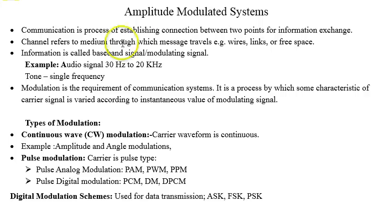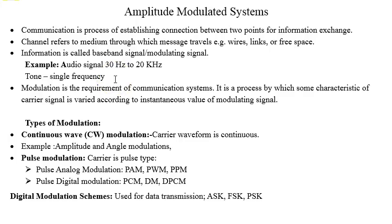The channel medium could be wires, links, or free space. The information we want to send from one point to another is called a baseband signal, or sometimes a modulating signal. An example is the audio signal, ranging from 30 Hz to 20 kHz. A tone is a single frequency — sometimes we modulate the carrier by a single frequency tone. Modulation is the process by which some characteristic of the carrier is varied as per the instantaneous value of the modulating signal.